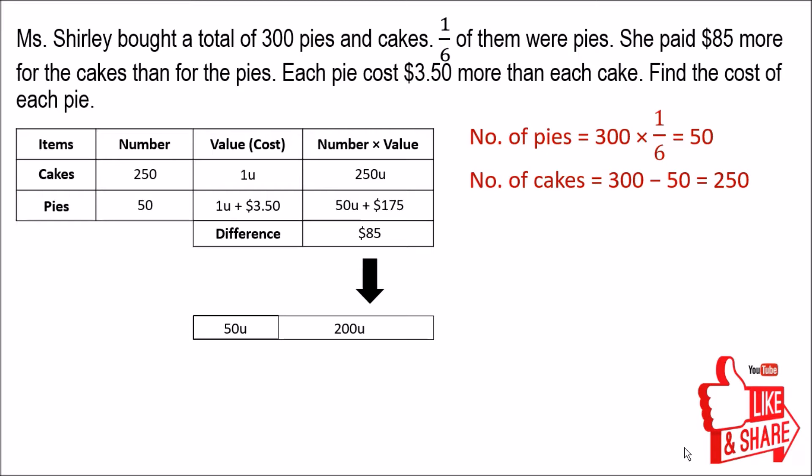In the model, we place the 50 units alongside the $175, representing the total cost of pies as 50 units plus $175. The difference between the two bar amounts — total cakes versus total pies — is $85. With this model, we are ready to solve the question.